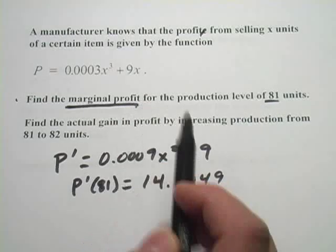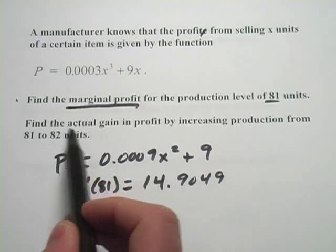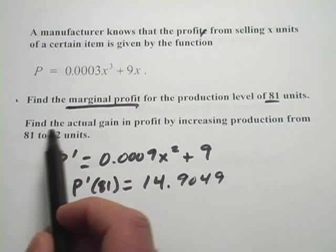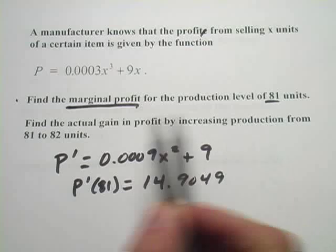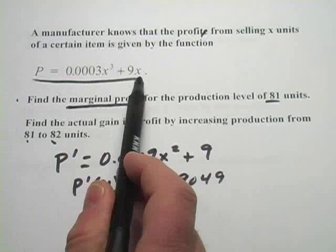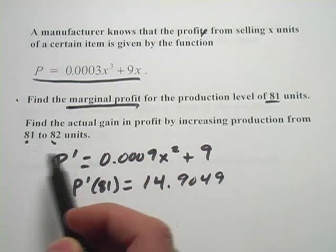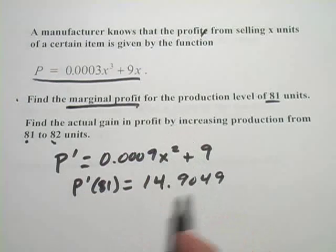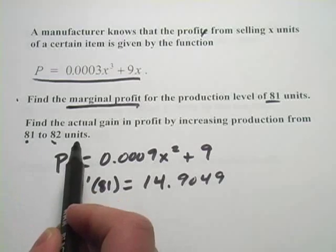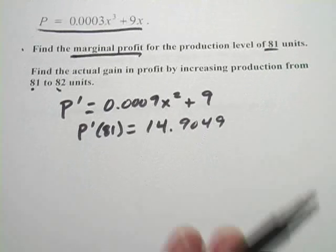So that's our estimate of the profit we would get from increasing from 81 up to 82 units by taking the marginal profit function. We could also test this exactly, and that's what they want us to do in the second part of this problem. Find the actual gain in profit by increasing production from 81 to 82. And what you would do there is find p of 82, this function, and p of 81 and subtract. It should be pretty close to this because the marginal profit function is a really good approximation of doing this amount of work. But let's see how close it is.